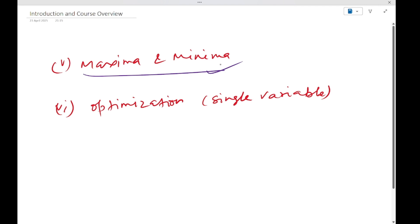This is also easier only. Again we have optimization, single variable only from GATE DA point of view. What does this mean?